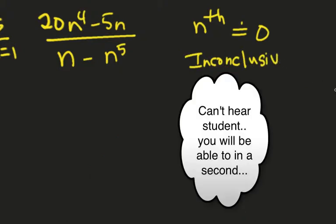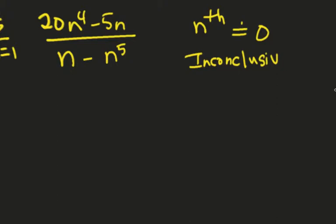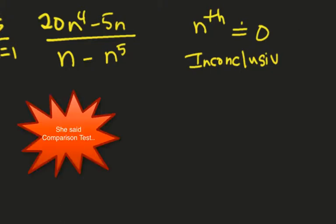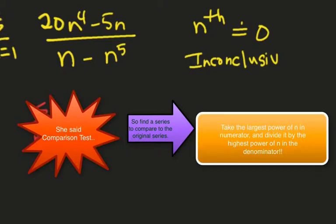Right, it's not a ratio or a root test. That's probably what you want to do here. So, the way we come up with b sub n, what's your b sub n going to be? What's your compared series? Do you know?